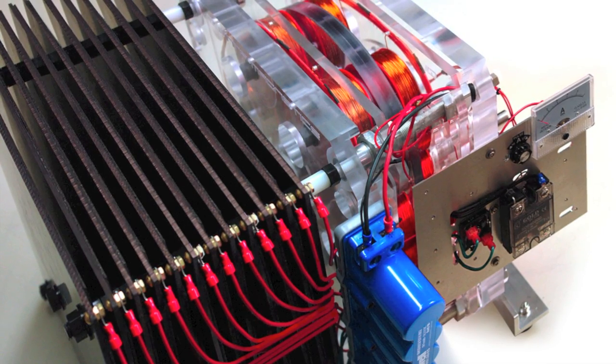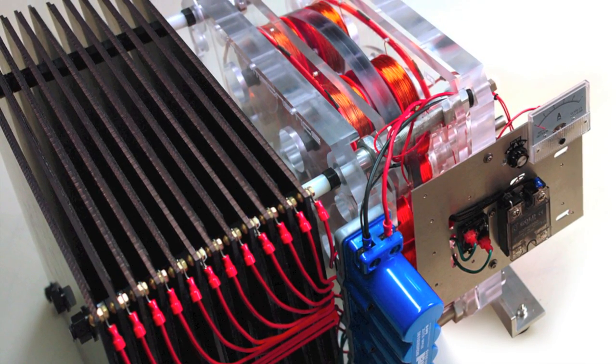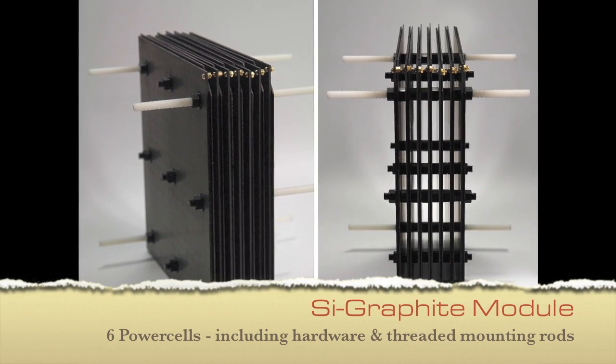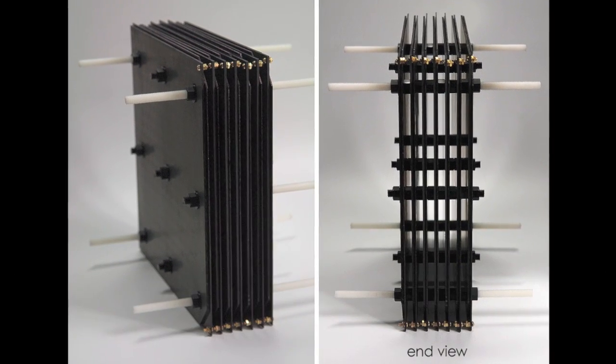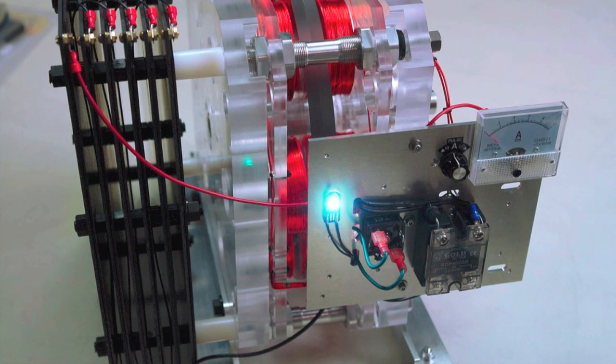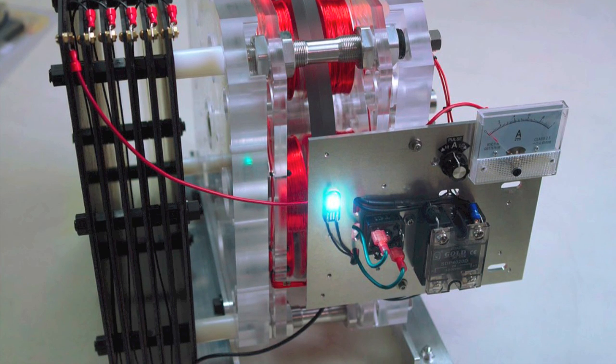This is the 6 cell module with the hardware included. And here is the standard Q beta. It doesn't show the ultra cap module, it's a direct connection.